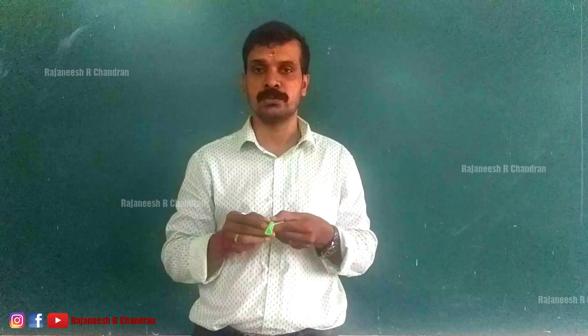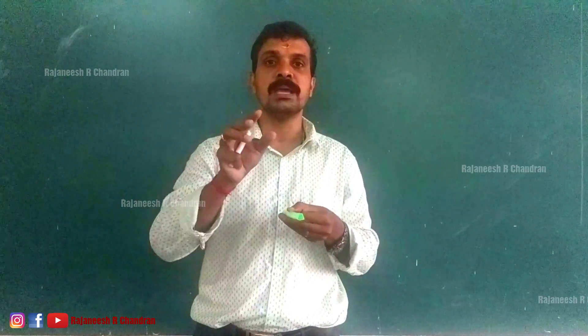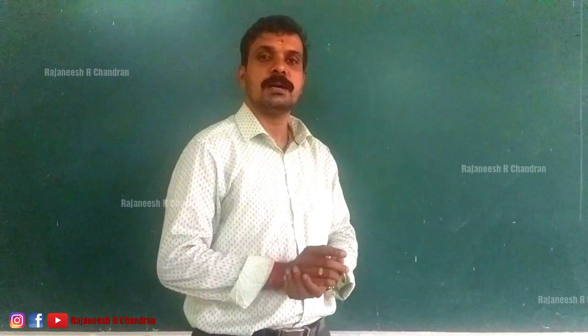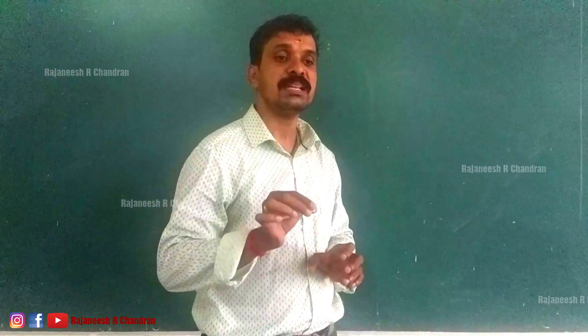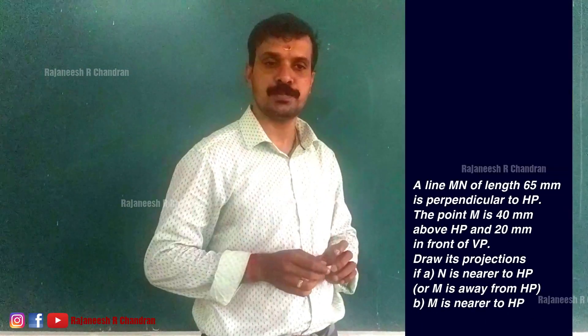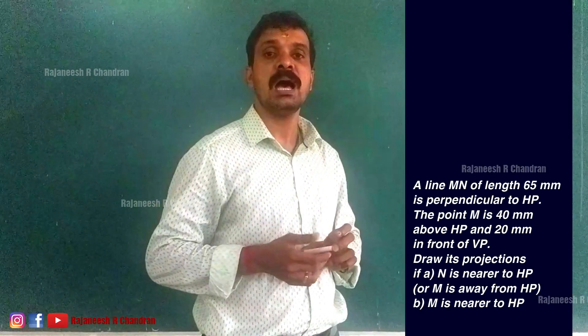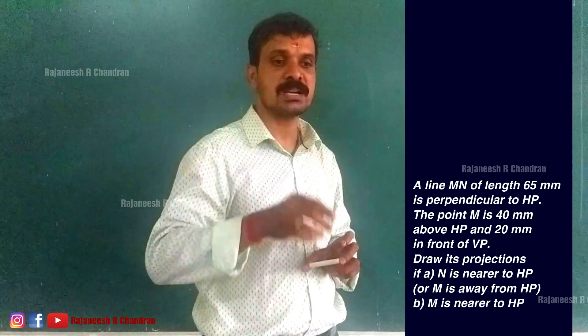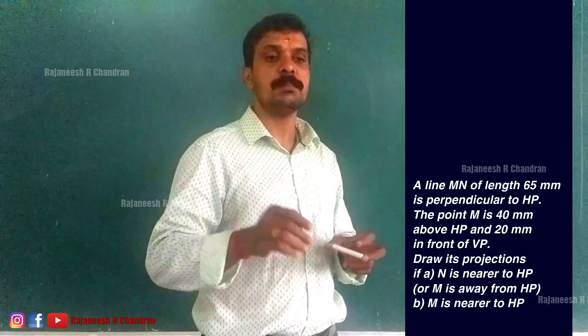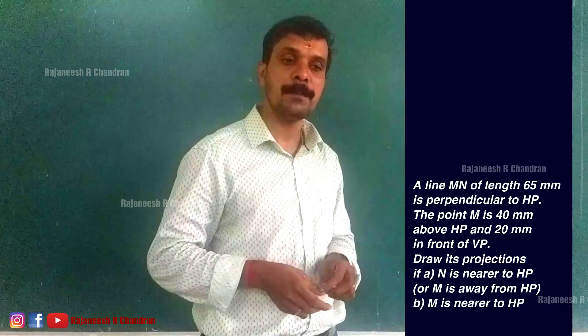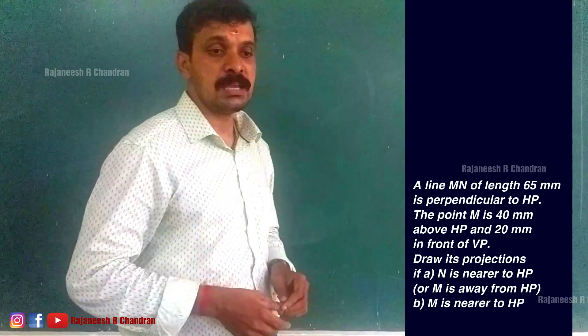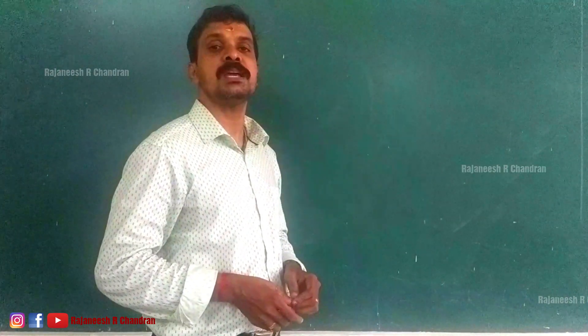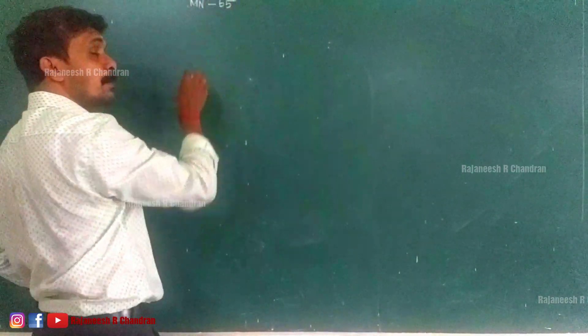You can understand this rule better by doing an exercise. The question on your screen is: a line MN of length 65 mm is perpendicular to HP. The point M is 40 mm above HP and 20 mm in front of VP. Draw its projections. There are two conditions: condition one is that N is nearer to HP, and condition two is that M is nearer to HP.